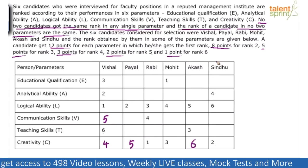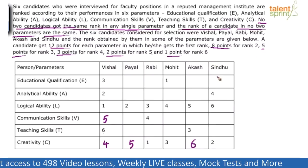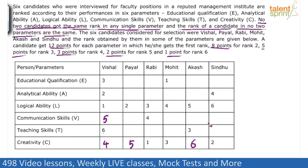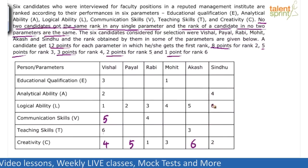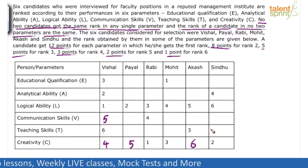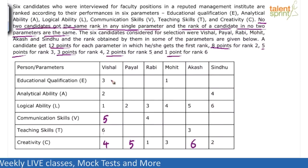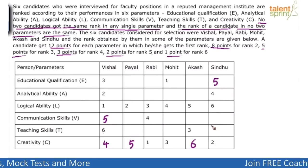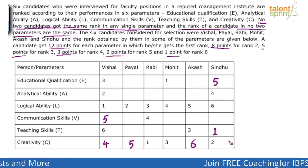For Sindhu's column: values 2, 4, and 6 are filled, so 1, 3, and 5 are missing. In one cell, 1 and 3 cannot come because they are already in that row, so 5 must go there. Of the remaining cells, 3 cannot come in one because 3 is already present in that column, so it must be 1, and then 3 goes in the last cell.